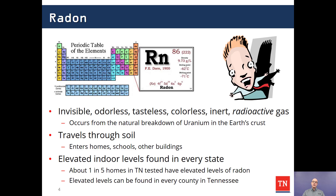Current data indicates that approximately one in five houses in Tennessee statewide will be elevated for radon — that is, have a radon value at or above the EPA's recommended reduction level of four picocuries. Some areas of the state will have higher incidence rates than that.